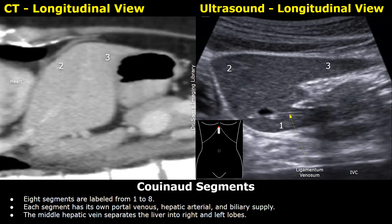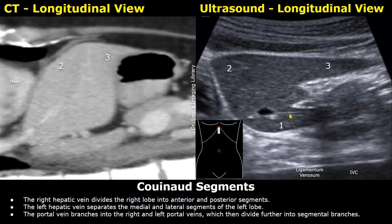According to Couinaud classification, there are eight liver segments labeled from one to eight. Each segment has its own portal venous, hepatic arteriole, and biliary supply. The middle hepatic vein divides the liver into right and left lobes, the right hepatic vein divides the right lobe into anterior and posterior segments, and the left hepatic vein separates the medial and lateral segments of the left lobe.